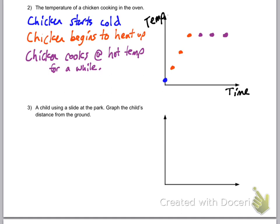And then, the chicken cooks at a very hot temperature for a while. So it doesn't keep getting hotter the whole time. It gets up to a certain temperature and it stays at that temperature while it's in the oven.